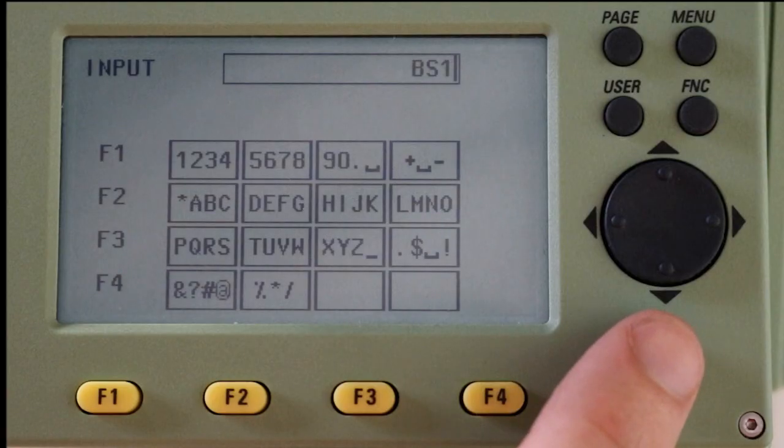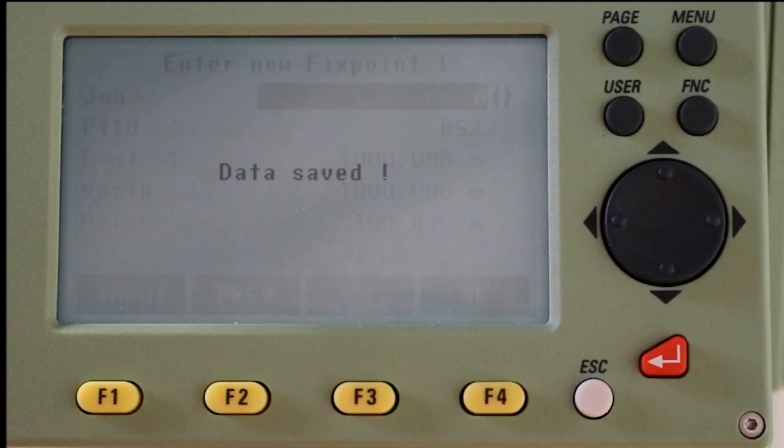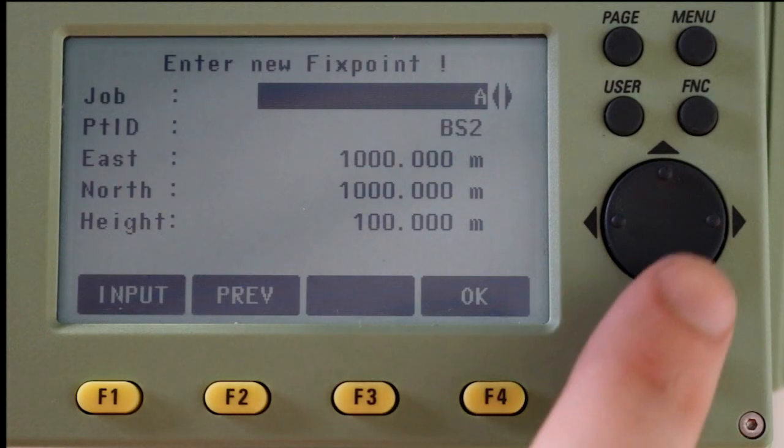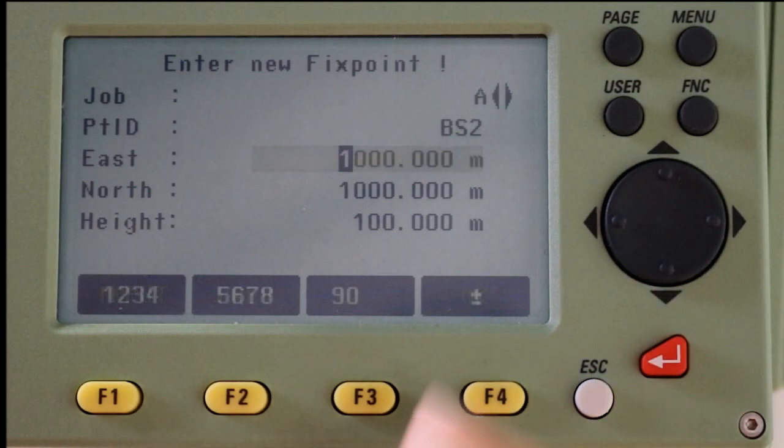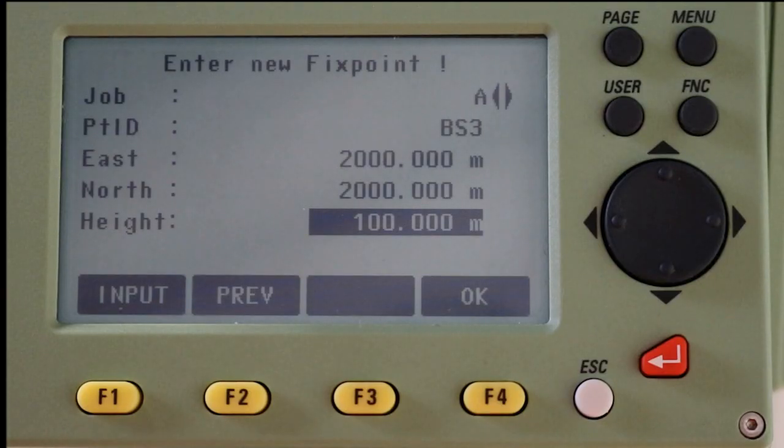When you press OK, you will see it automatically changes the point name to the next numerically available one, BS2. I will give this backsite coordinates of 2000, 2000, and height 100. Press OK and then press escape to leave this mode.